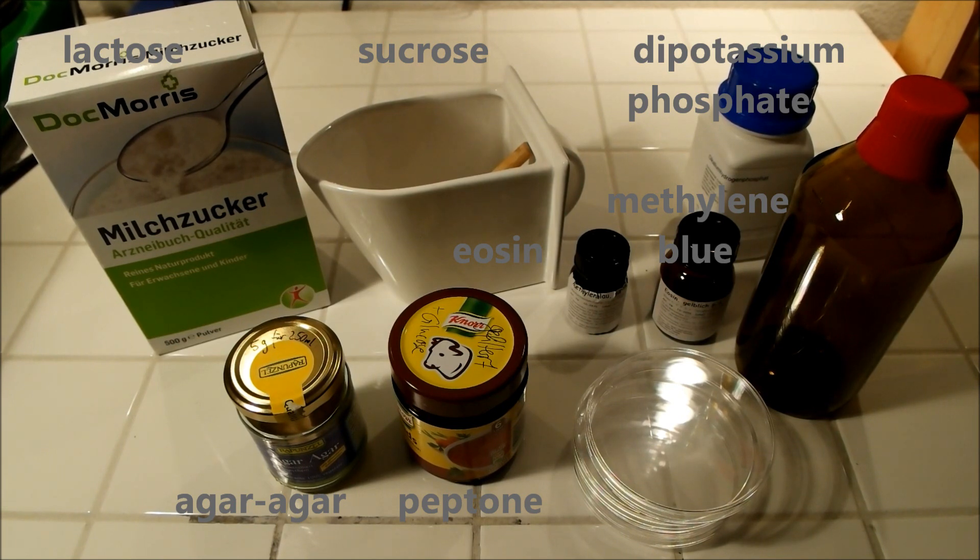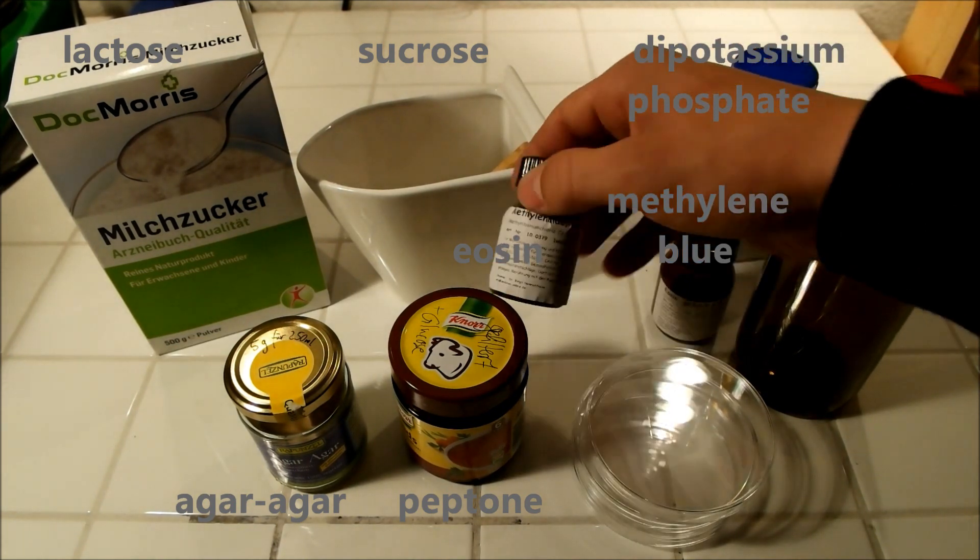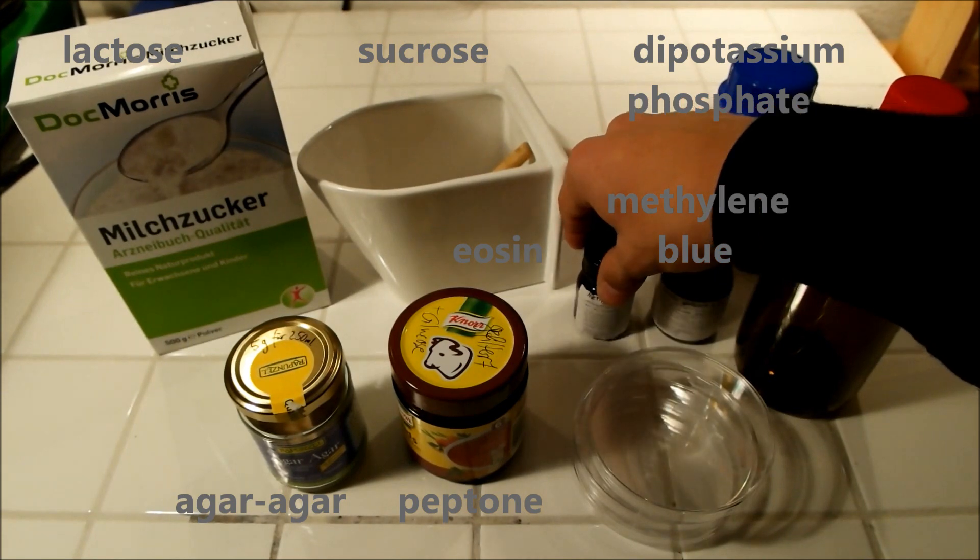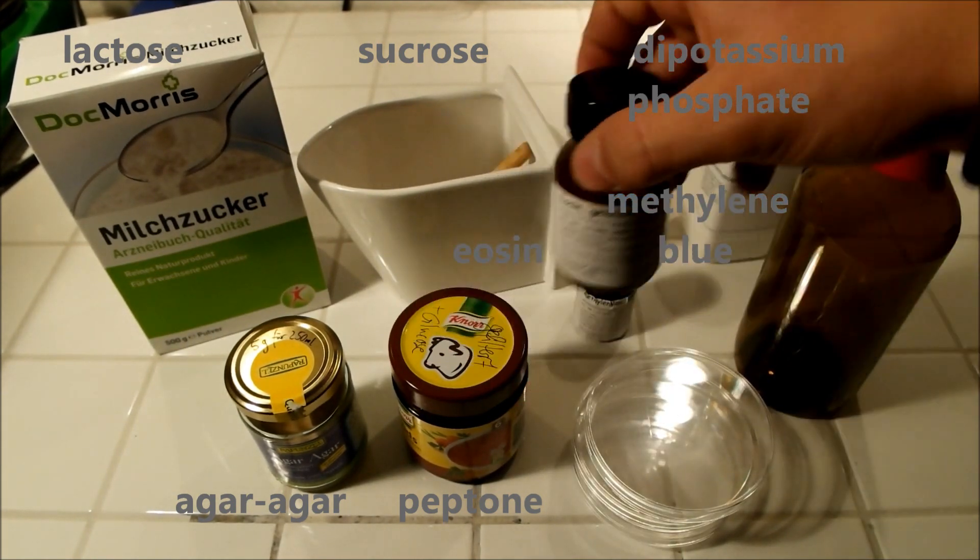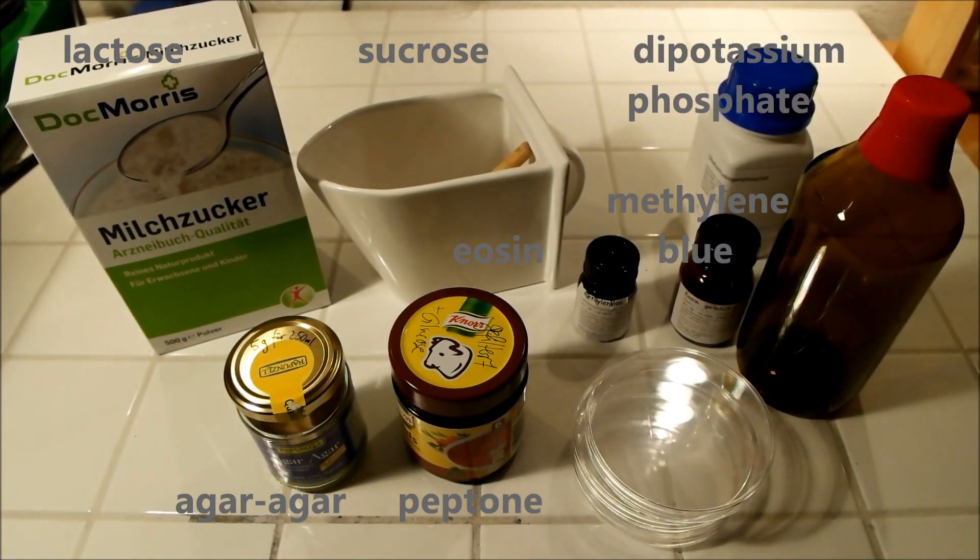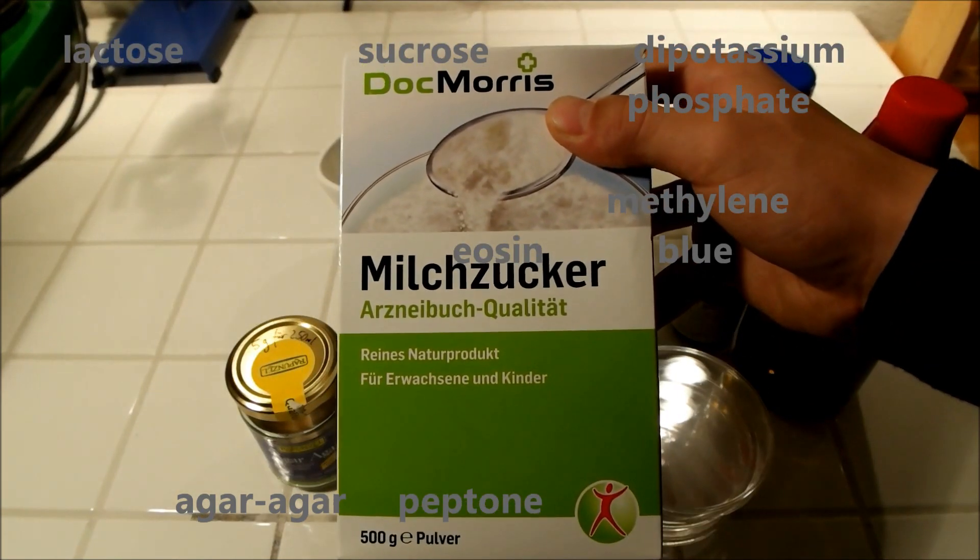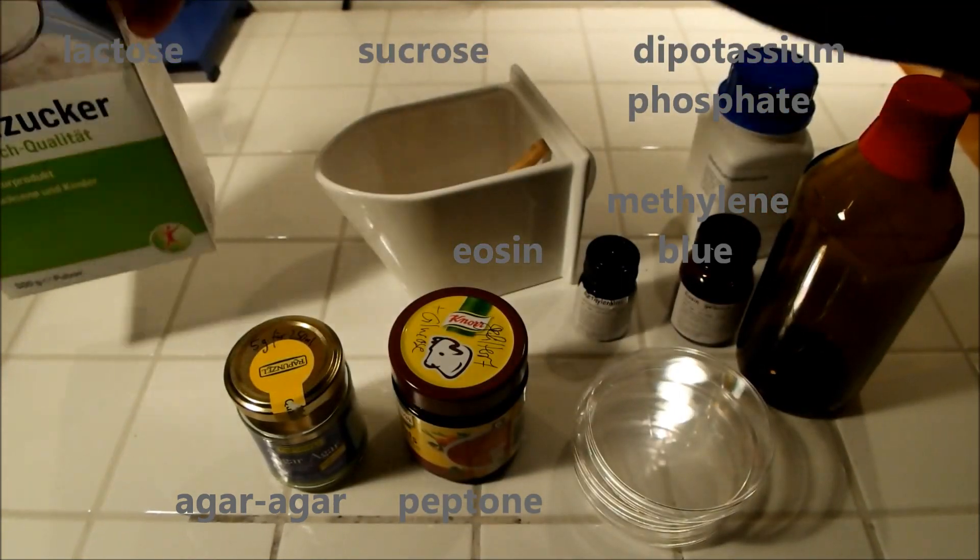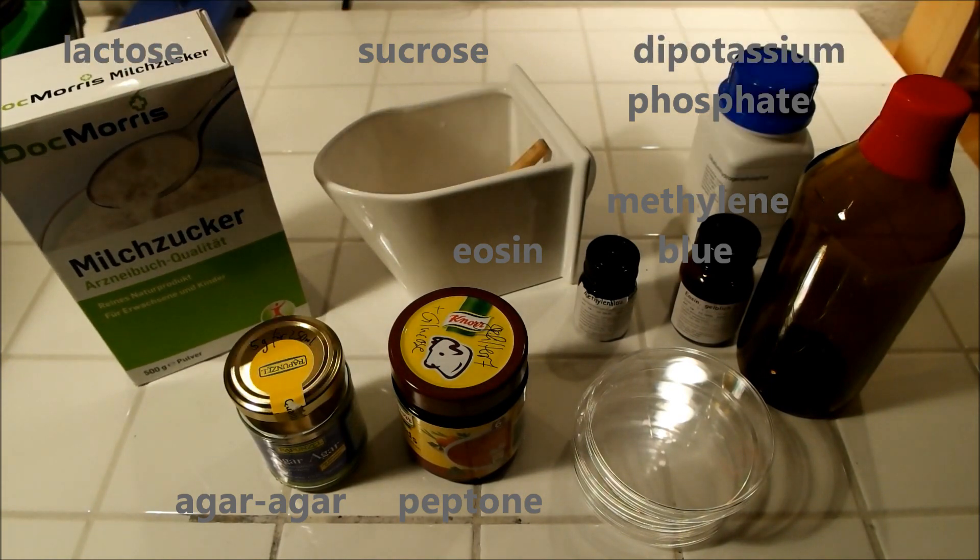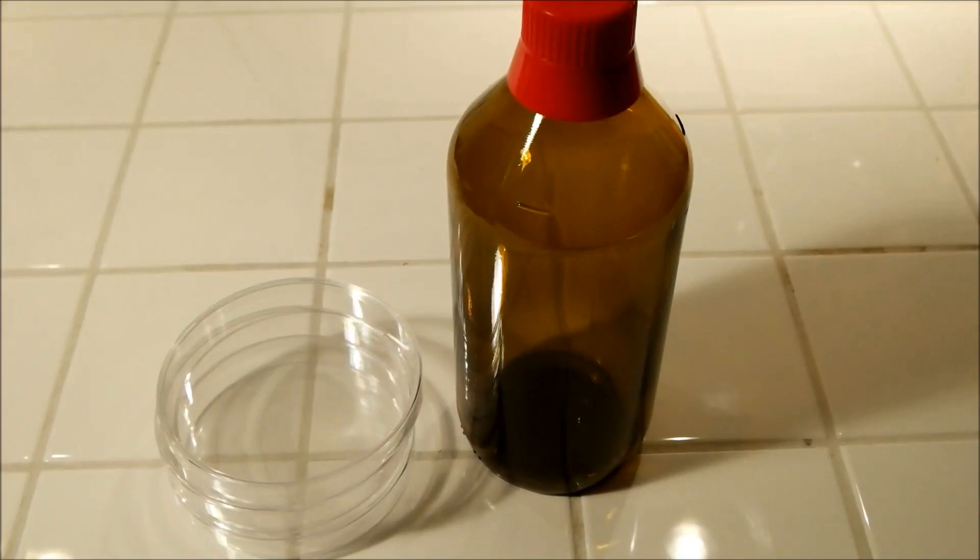The dyes, Methylene Blue and Eosin Yellow, that's those two little containers, they are toxic for gram-positive bacteria. And furthermore, the colonies of bacteria which are able to ferment lactose, which you can buy in the supermarket, that the E.M.B. agar contains, like E. coli, will have another color than those bacteria who can't ferment lactose, like Salmonella, different types of Salmonella.